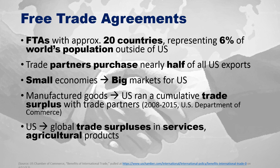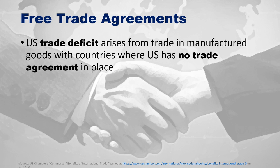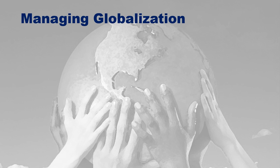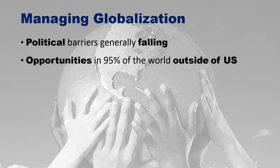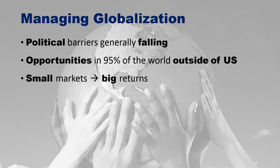Importantly, the US trade deficit actually arises from trade in manufactured goods with countries where we have no free trade agreement in place. Our trade deficit is really because we do not have an FTA in those cases. Managing globalization is a complex endeavor. Generally speaking, political barriers are falling, which leads to many opportunities in the 95% of the world outside the US — many of which are small markets that can give US companies big returns and translate to more jobs here at home.